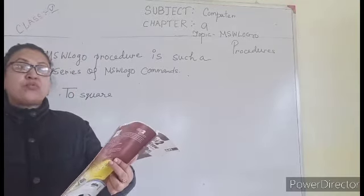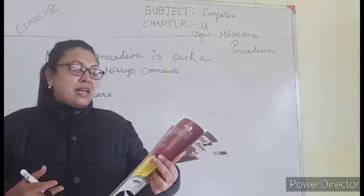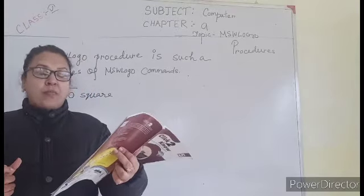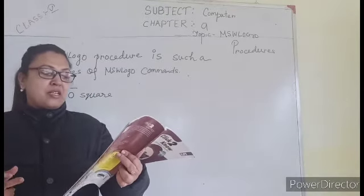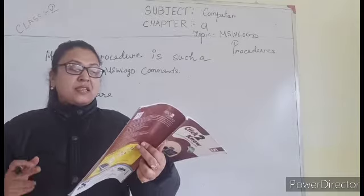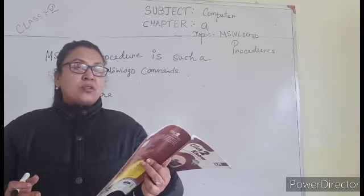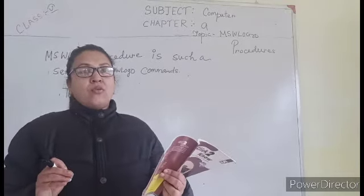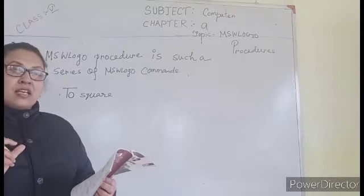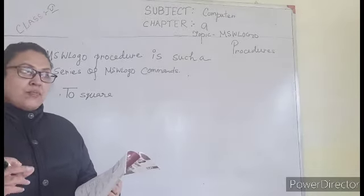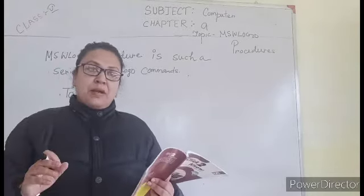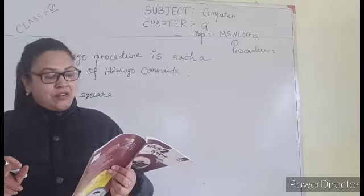But some of the symbols are not allowed. Which symbols? To give a name, like any arithmetic operators, plus, minus, multiplication, divisions, parentheses, brackets, double quotes. These symbols are not allowed in the name portion. So which are allowed? Any alphabets, any numbers, but it should start with the alphabet.